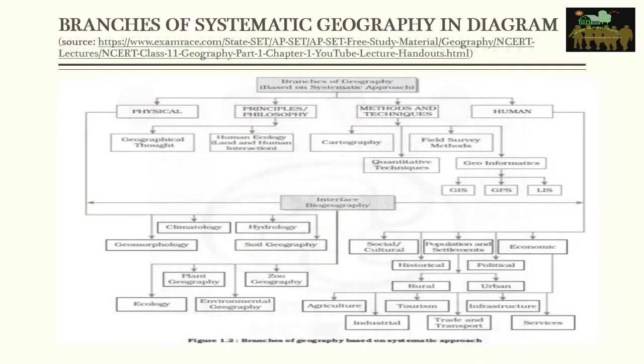Let's take a quick look at systematic geography in diagram form. The diagram shows the branches of geography based on the systematic approach, including physical geography, principles of philosophy, methods and techniques, and human geography. Take some time to go through this diagram before we move on.